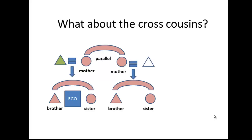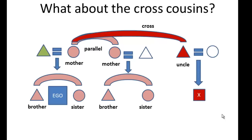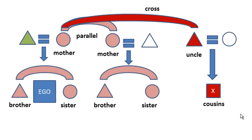What about the cross-cousins? We'll give mother a brother — that will be her cross-sibling. We'll use the word 'uncle' because it's familiar. That cross-sibling of mother, the mother's brother, is called by a term different than the term applied to Ego's father — so he is not called father. Similarly, his offspring are not called brother and sister; they're called cousins. So cross-siblings of the parent and cross-cousins are distinguished from the parallel siblings of the parents and the parallel cousins. That cross-parallel distinction is critical to what's called an Iroquois Kin Terminology.